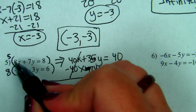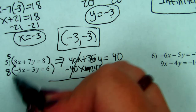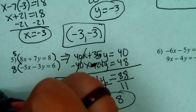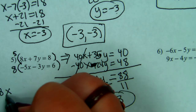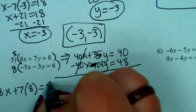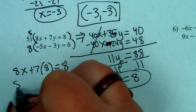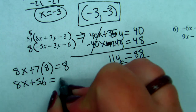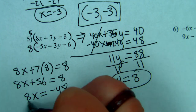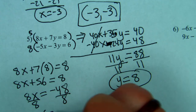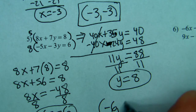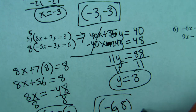This is the hardest kind — we have to multiply both equations by a number so that they eliminate one of the variables. Then we pick one equation to substitute in to find x. Y is 8, so picking the top equation: 8x plus 56 equals 8. So x equals negative 6. Our ordered pair is negative 6, 8.